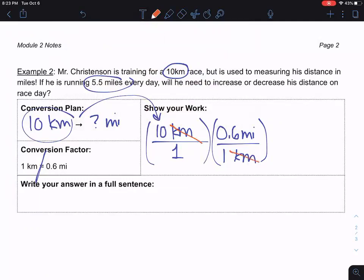And then I'm going to cross out top to bottom. I see that unit on the top and on the bottom, so it goes away, and I'm left with miles, which means that my answer will be in miles, which is great because that's what I have in my conversion plan. Then I'm going to multiply across and divide down. So 10 times 0.6 divided by one is just six. And so 10 kilometers is the same distance as six miles.